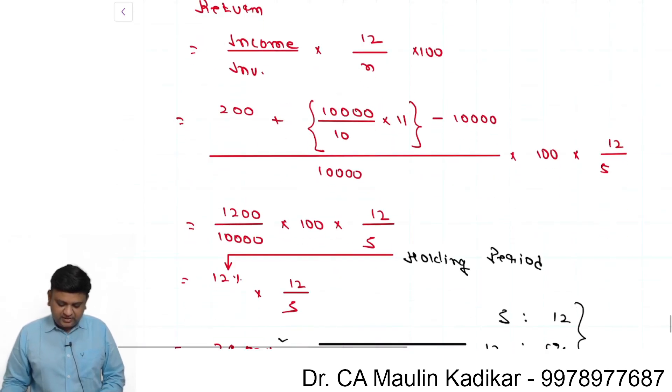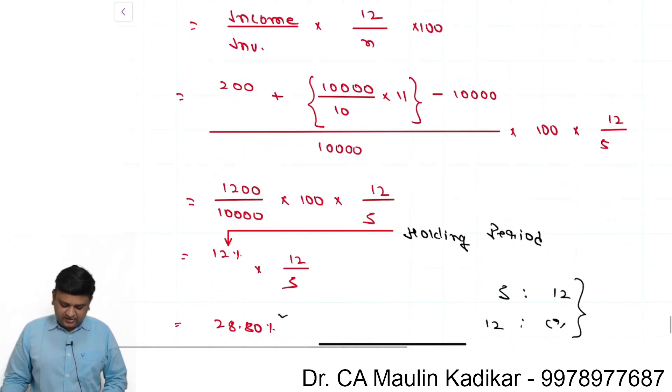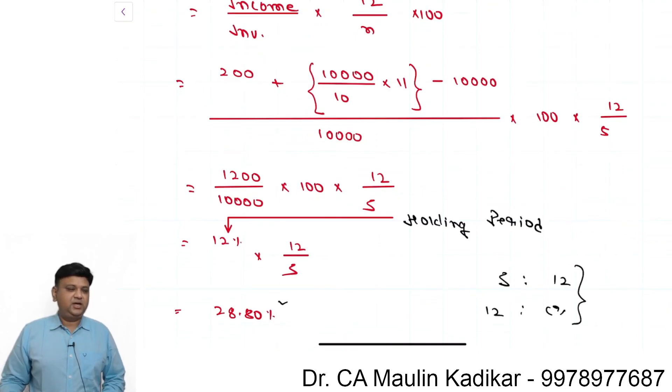So into 12 divided by N, what happens is annualized return. Otherwise, it is the holding period return where we don't consider the time period.